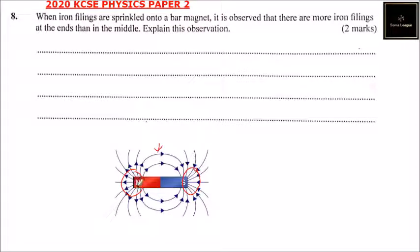So it means that at the end of the magnet, more magnetic force is experienced. And that is why the iron filings are more at the ends of the magnet compared to the middle of the magnet.